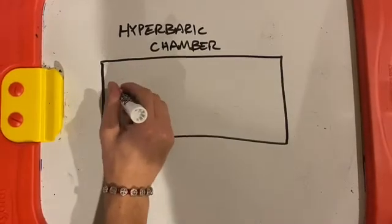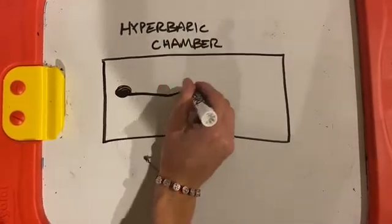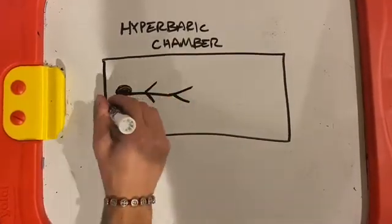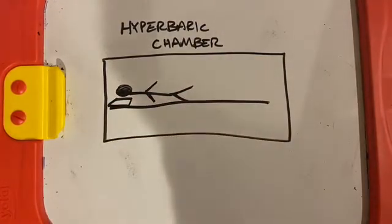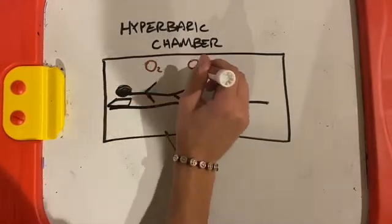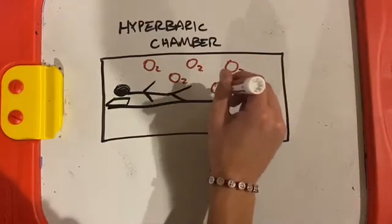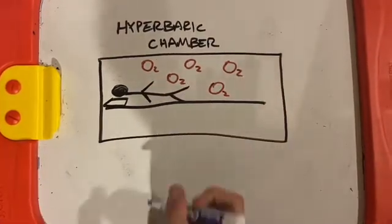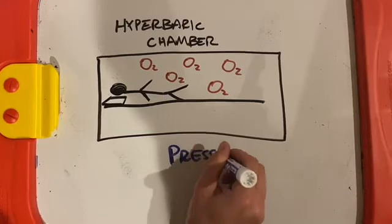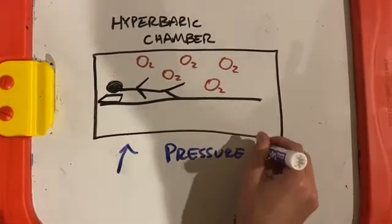These are chambers that involve pressurizing the air surrounding the patient, similar to that of when the patient was diving, and then slowly decreasing the pressure. This is supposed to reverse the effects of the nitrogen bubbling inside of the patient's body, similar to how it occurred.